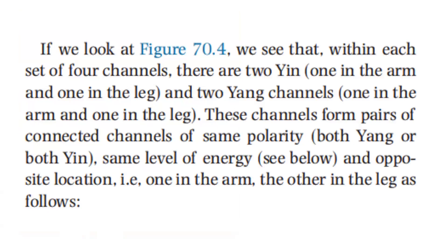If we look at the previous figure, we see that within each set of four channels, there are two yin — one in the arm and one in the leg — and two yang channels, one in the arm and one in the leg. These channels form pairs of connected channels of same polarity, both yin or both yang, same level of energy, and opposite location — one in the arm and the other in the leg.